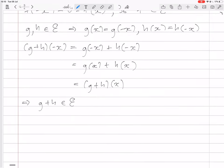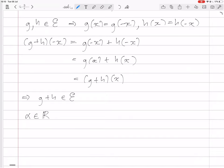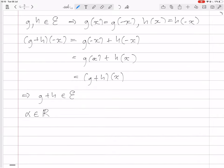Now I want to do multiplication. So we have that g that's in E. Now we also take a scalar. We also take a scalar alpha in the reals, because this is a set of real functions, reals to reals. Now we look at alpha g of minus x. That's the same as alpha times g of minus x, right?